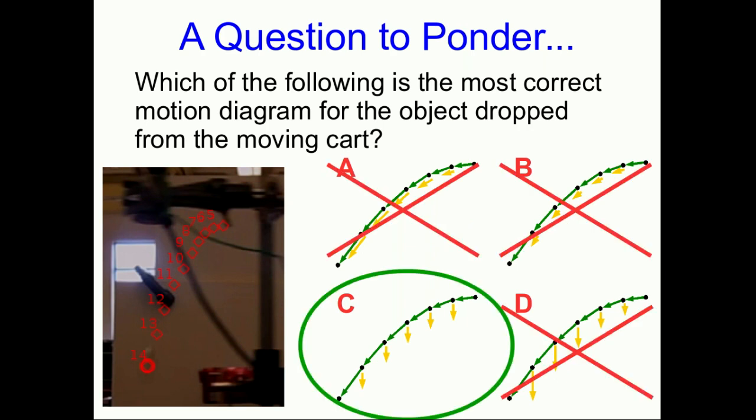If you chose A or B, you're probably mixing up acceleration with velocity. If you chose D, that may also be because of mixing up acceleration with velocity — you may be thinking that just because the object is getting faster, the acceleration must be bigger. But remember, the acceleration is the rate of change in velocity. It's not really connected with how big the velocity is.